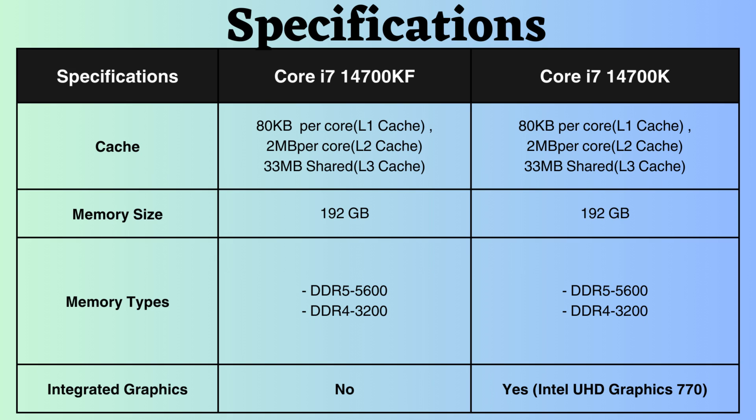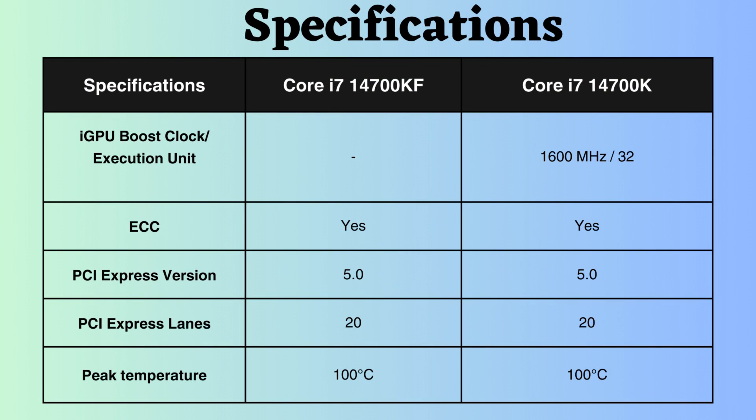The Core i7-14700KF does not support integrated graphics, while the Core i7-14700K supports Intel UHD Graphics 770 with a boost frequency of 1,600 MHz.